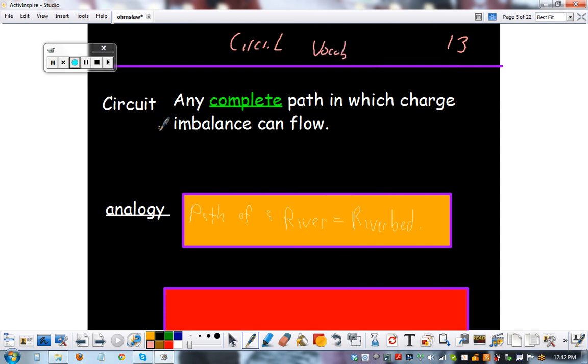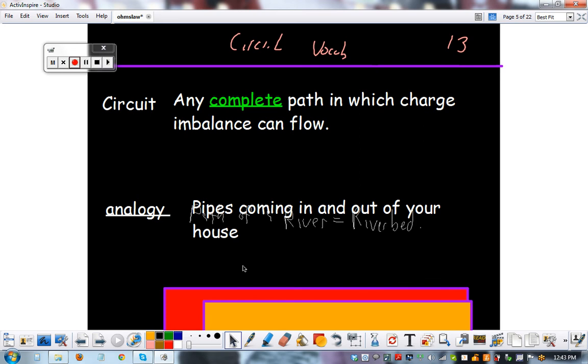Circuit is any complete path in which charge imbalance can flow. If you haven't watched the battery video yet, you should watch that now. Analogy is the path of a riverbed. So the circuit is like the wires in the battery. And whether energy is flowing or not, whether water is flowing down the river, there's still this path that you can see. You can see even if it's dried up where the river used to be and will be in the wintertime when it's raining.